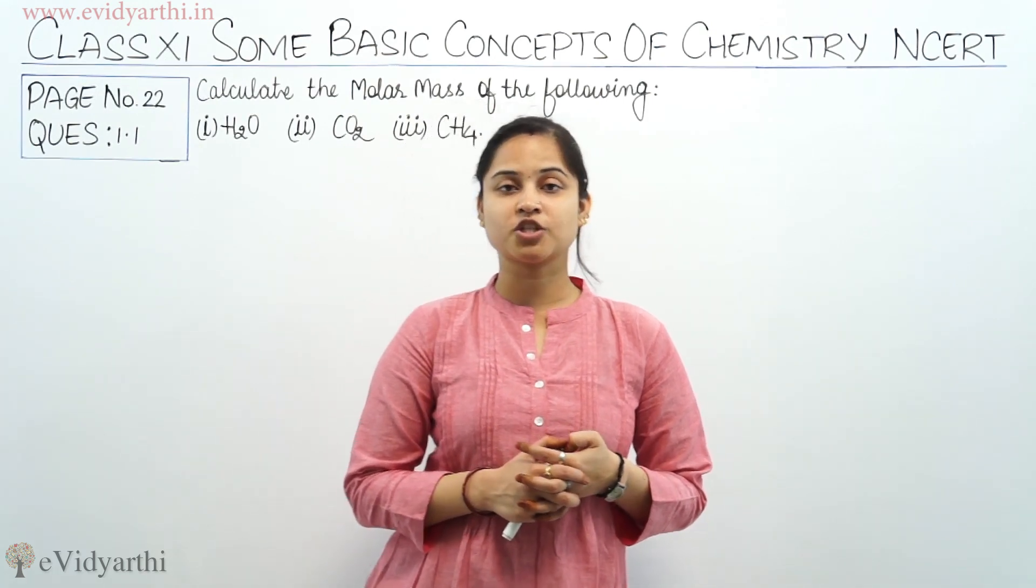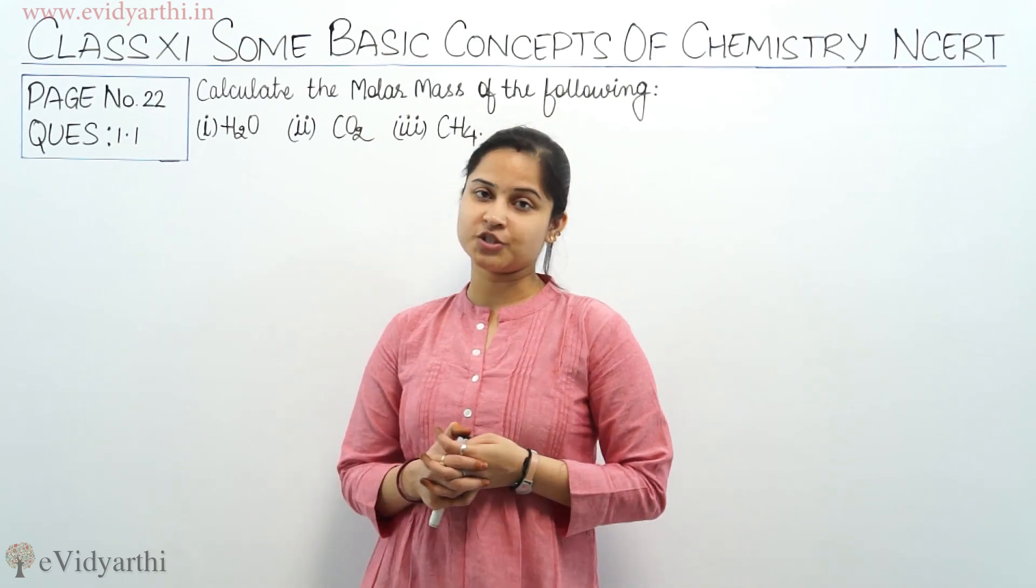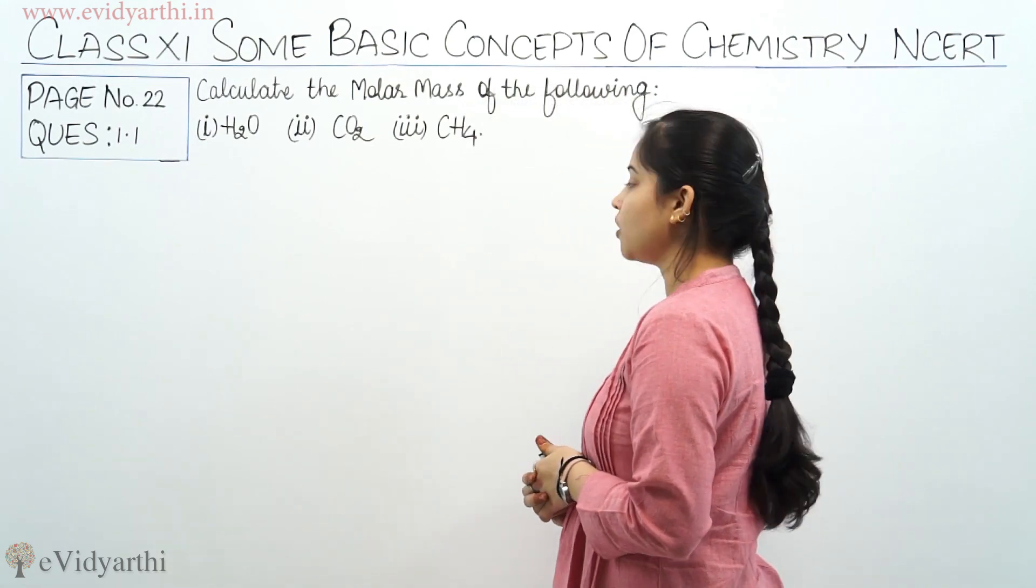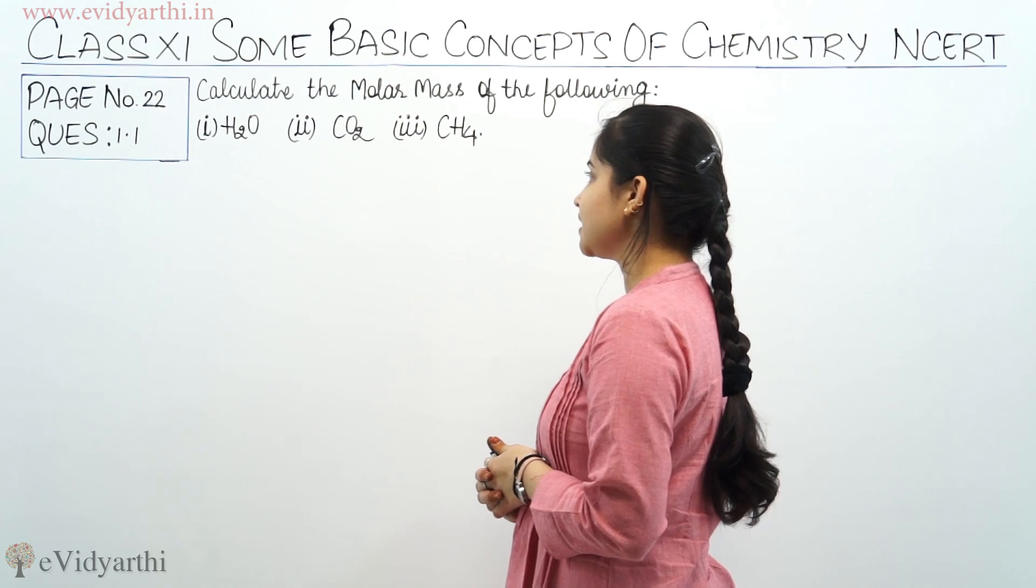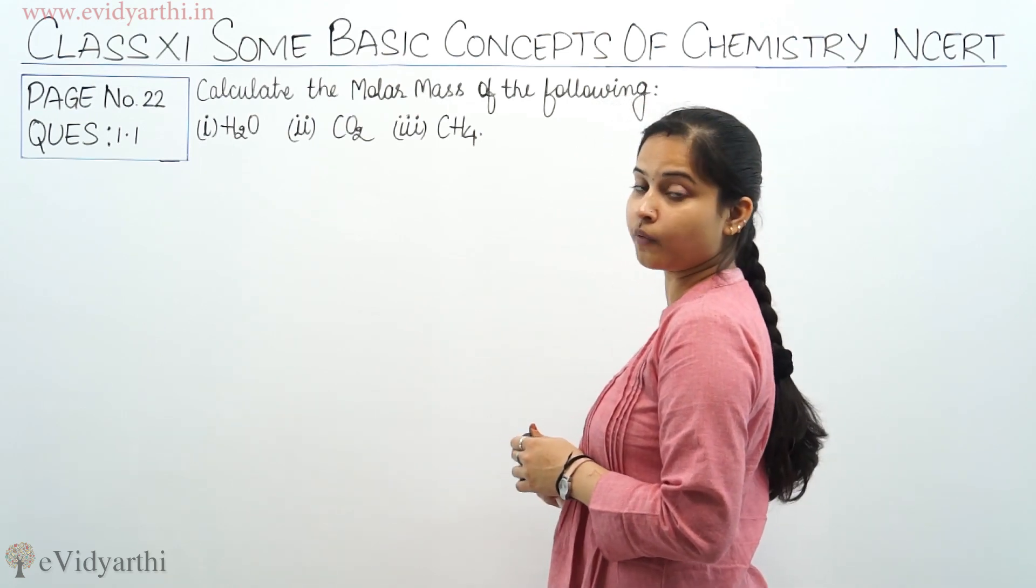So let's begin with the first question of the first chapter, page number 22. The question is: calculate the molar mass of the following: H2O, CO2, and CH4. So we need to calculate the molar mass of these three following parts.